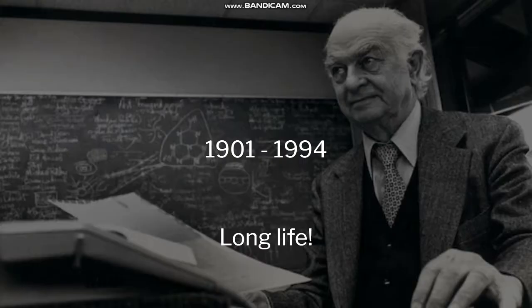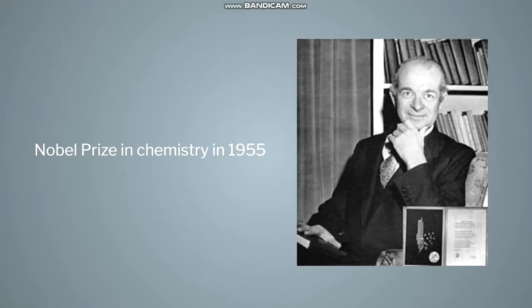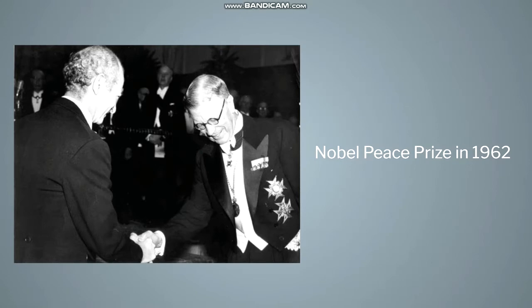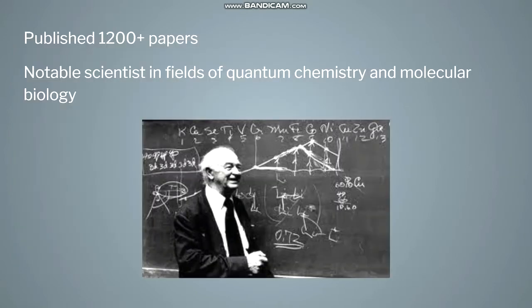He was born in 1901 and died in 1994. He is the only person to win two unshared Nobel Prizes. He won the first Nobel Prize in Chemistry in 1955, then went on to win his second Nobel Prize in Peace in 1962. He published more than 1200 papers and books.